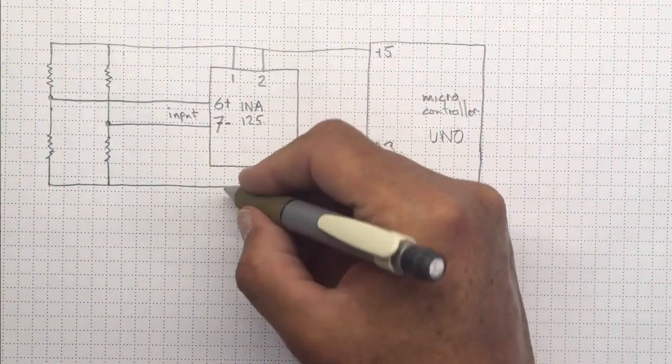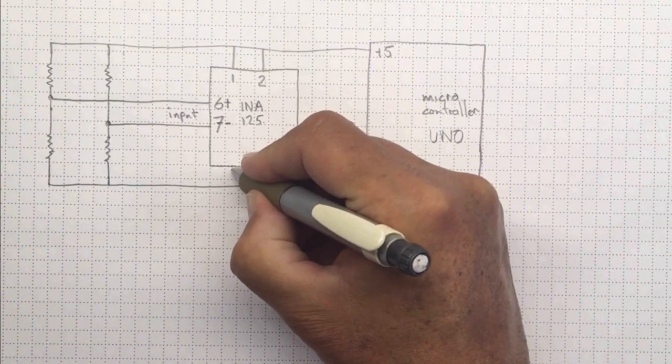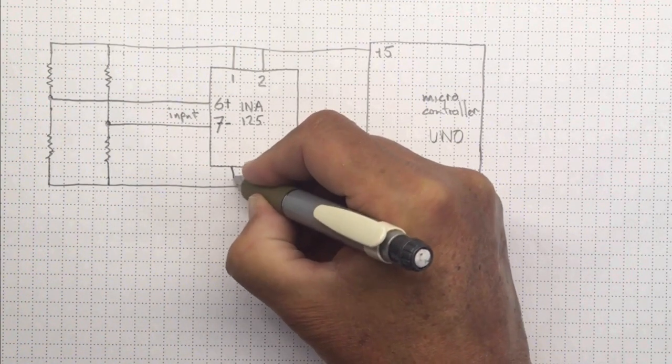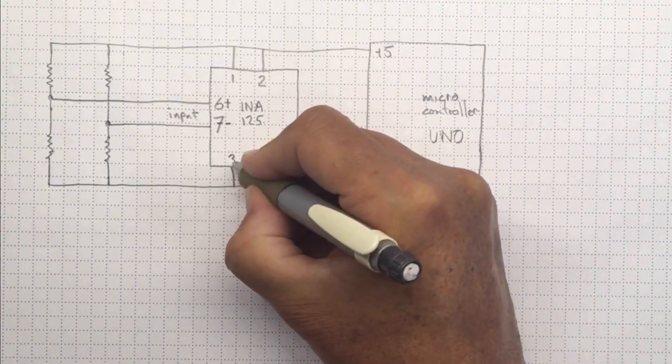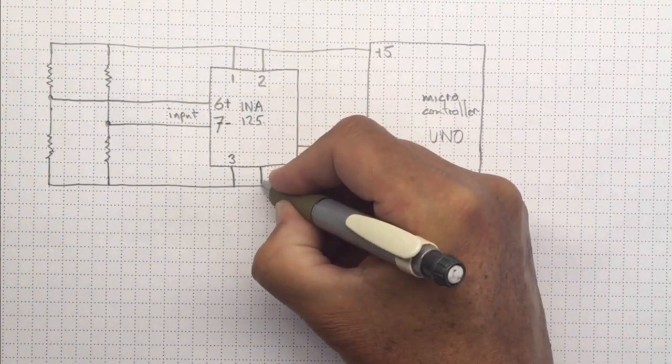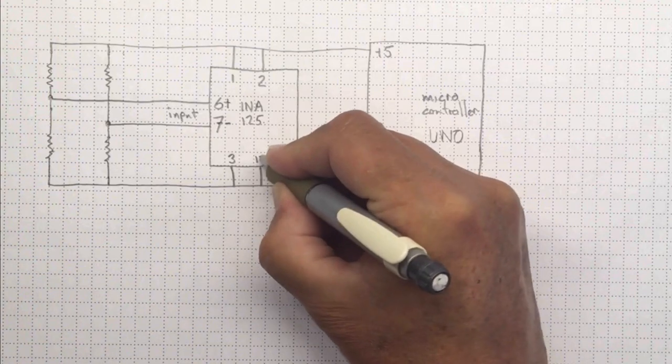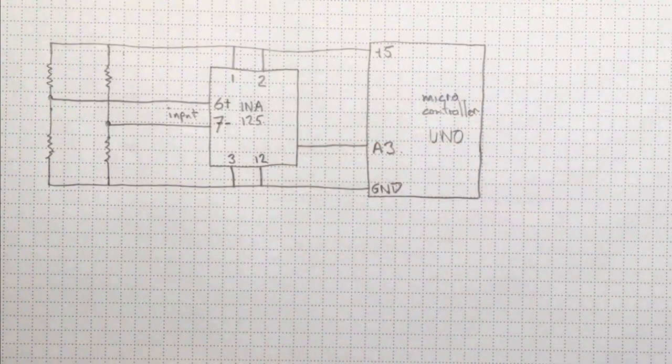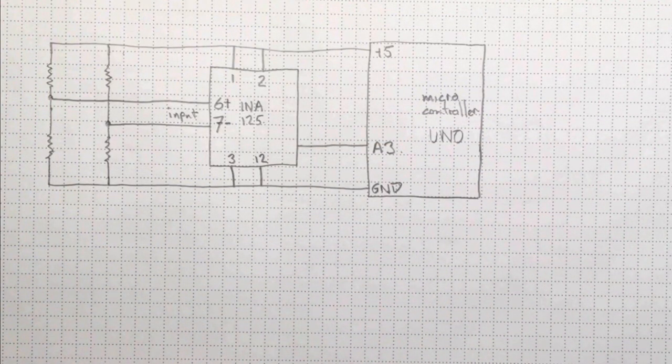We need to provide ground for the return current coming from the INA-125. And that's pin 3 is the ground return. And we also need a ground reference. That's pin 12 on the INA-125. So there's two more connections we need to make.